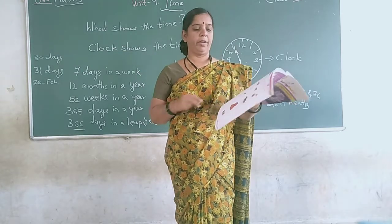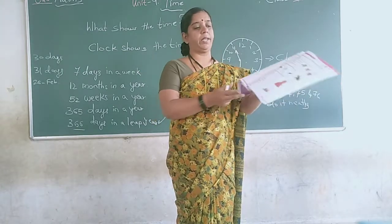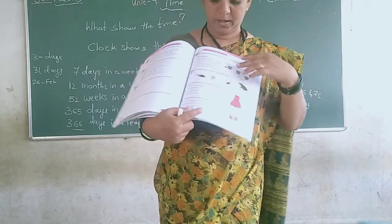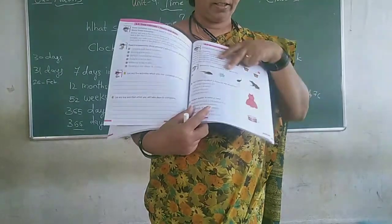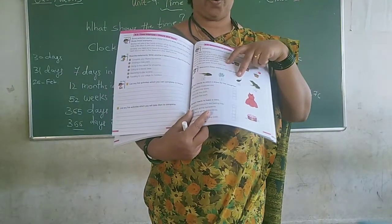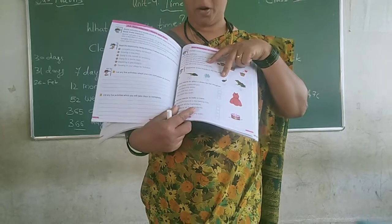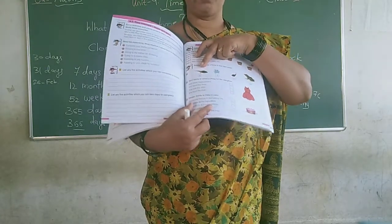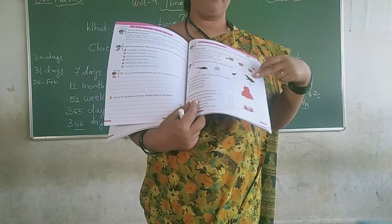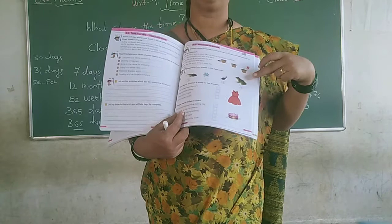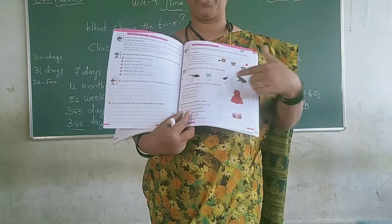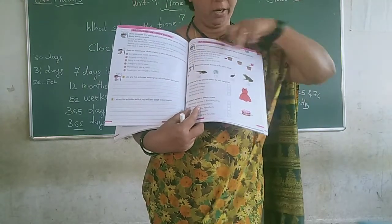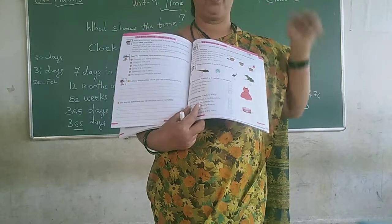Here they have given the life cycle of a frog. First there are eggs, then the eggs develop into a tadpole, then the tadpole grows to a bigger size, and finally converts into a frog. You have to write the sequence numbers: 1, 2, 3, 4.